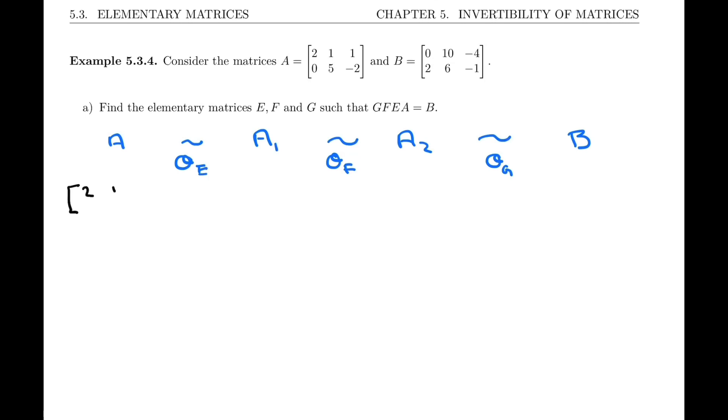So the idea is to find what these operations are going to be, just by inspection, just by looking at the matrices. Since they're fairly small, it won't be too difficult to find a path from A to B. So you notice the 2 in B is at the bottom, so I'm going to start with interchanging the rows. I'm going to do row 1 interchange with row 2.